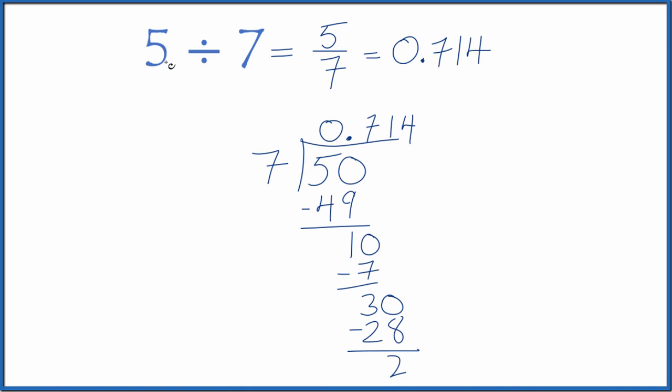This is Dr. B looking at 5 divided by 7. The answer is either 5 sevenths, if you want a fraction, or 0.714, if you want a decimal. And again, this is rounded. It does keep going a little bit. Thanks for watching.